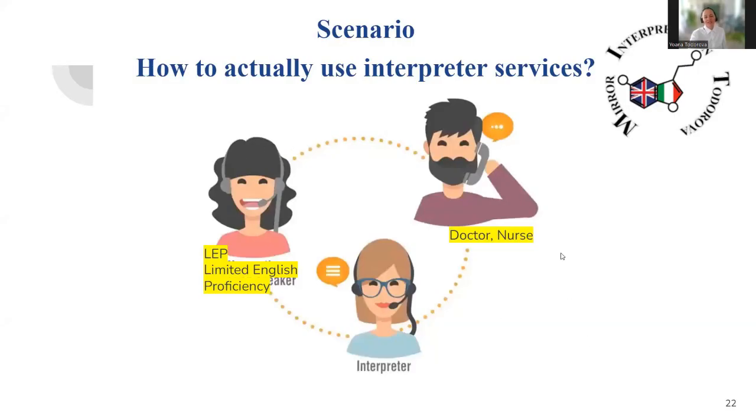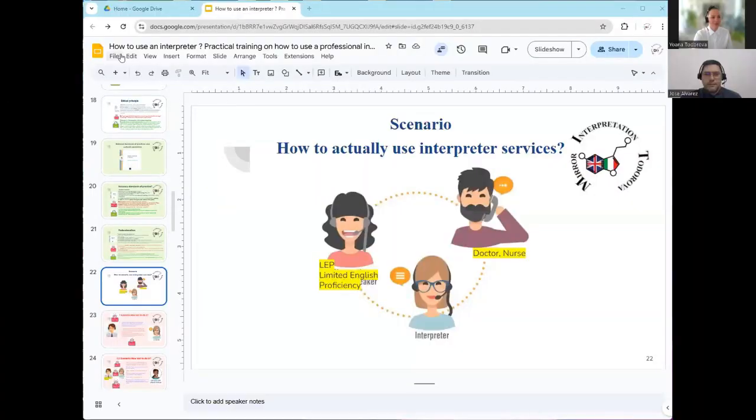Now this next section will be how to use an interpreter — some real scenarios that I'm going to elaborate with you and show how it should be done. We're going to have three characters in this setting: a limited English speaker, an interpreter, and a doctor — how and when to address the interpreter. I have the honor to have Jose join as the doctor in these scenarios. There will be five scenarios of what not to do when you use an interpreter, and then me and Jose will show you how to do it properly.